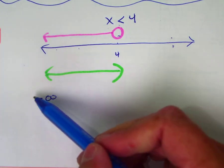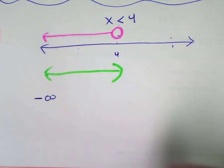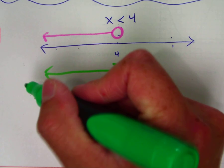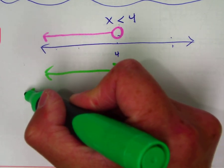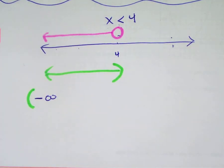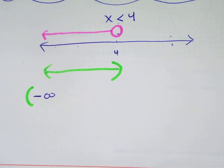Class, what symbol do I use always with either positive or negative infinity? You're always going to use a parentheses. Always. Doesn't matter if it's positive or negative infinity. Here's another clue.